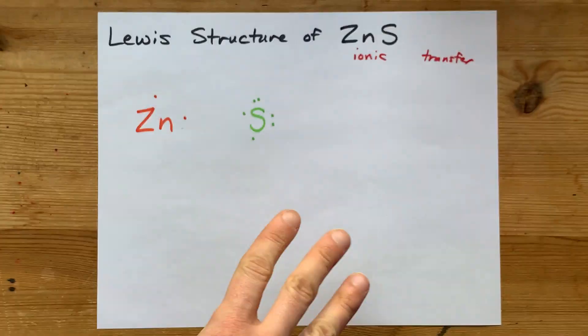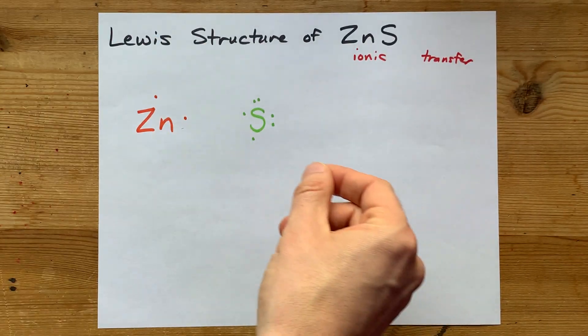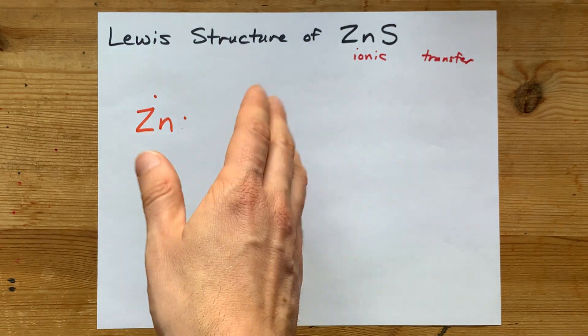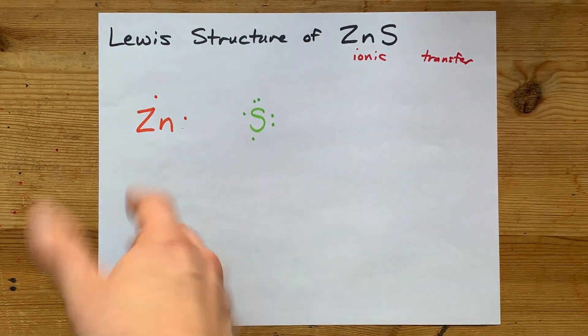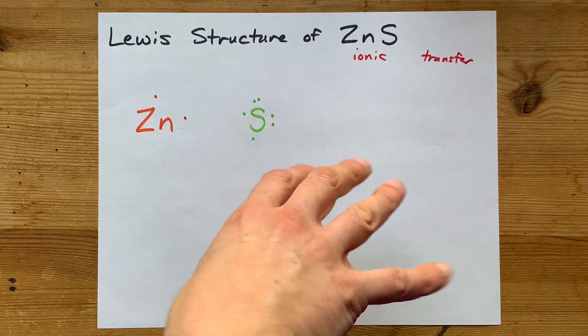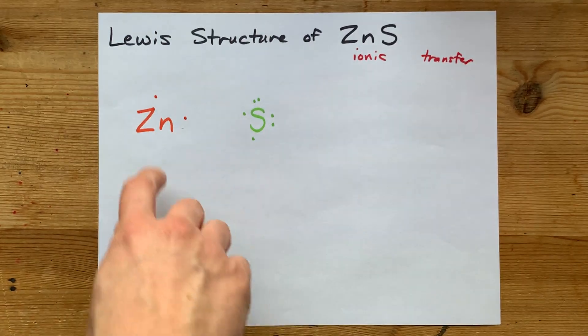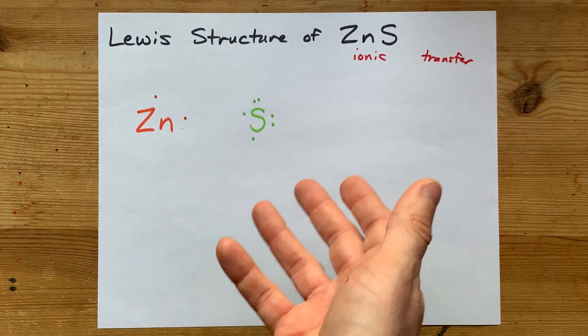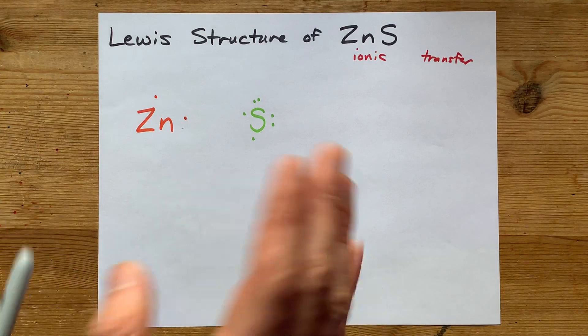Now, most atoms follow the octet rule, which means you want each atom to have eight electrons in its outer shell. That's mostly true for non-metals, because non-metals are the ones taking electrons from metals. So it's totally fine that zinc's not going to have eight in its outer shell. It gave away electrons. It's going to be an empty outer shell instead.